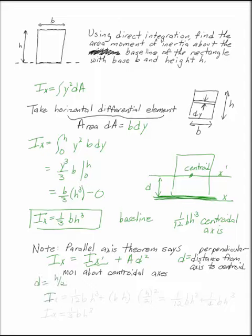What this says, the parallel axis theorem says that ix is 1 12th bh cubed plus bh, that's the area of my rectangle, times h over 2 squared. If you write that out, you get 1 12th bh cubed plus 1 4th bh cubed, which is very nicely what we calculated by direct integration above.